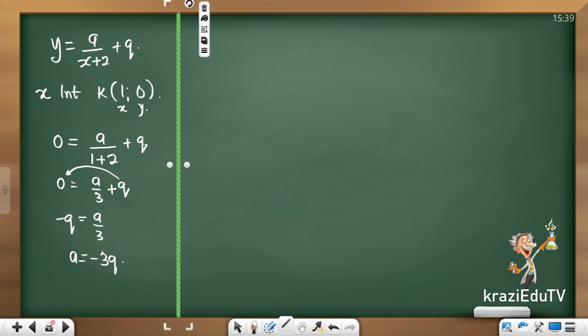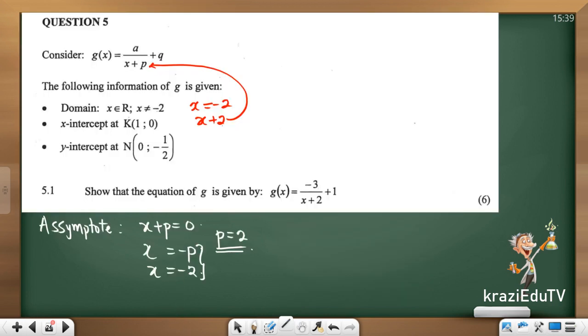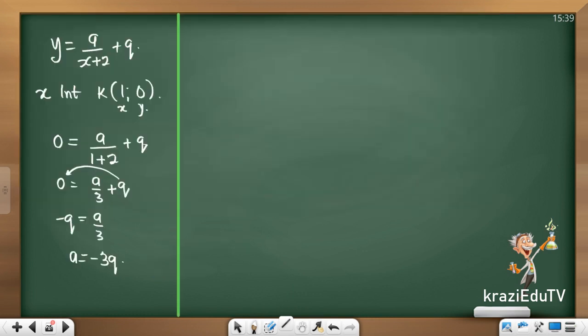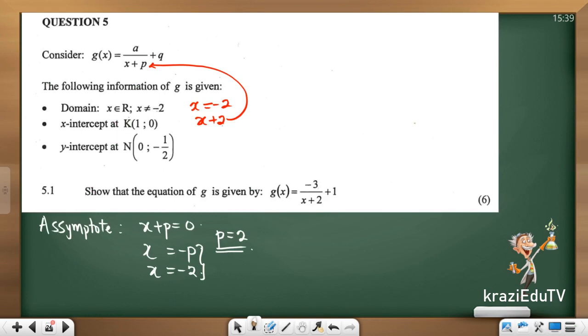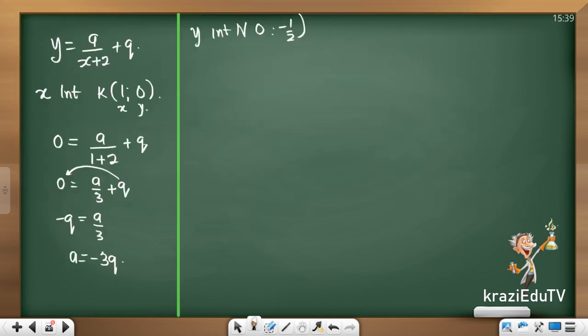Awesome. Now, we're not moving any forward, but let's go check something. There's another thing. y intercept 0 and negative half. In mathematics, anytime we have two unknowns, we've got to solve it simultaneously. I have a and q. So I've got to find another equation.